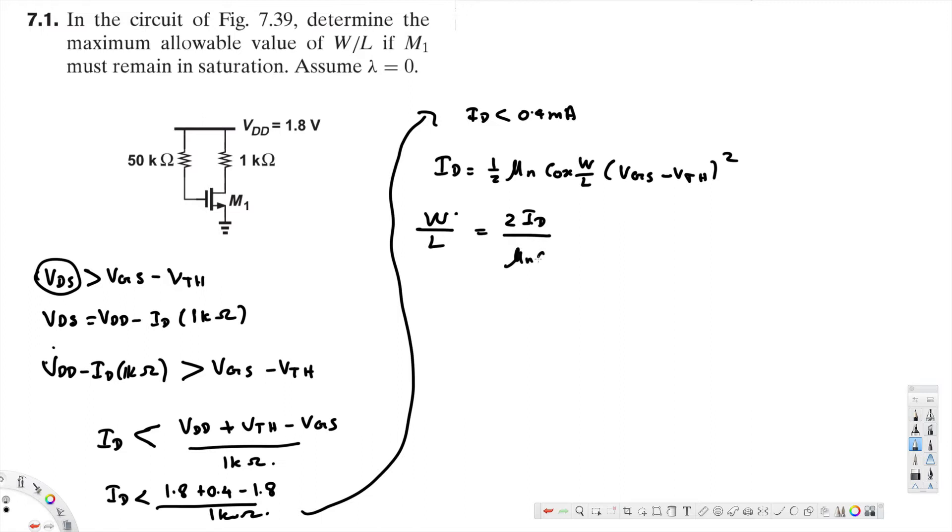divided by mu N Cox times VGS minus V threshold whole square. Now here W over L is maximum allowance, so maximum allowance means this one should be less than 2 times 0.4 milliampere over mu N Cox, the value of mu N Cox is 200 micro ampere per volt square, times VGS is 1.8 voltage minus V threshold is 0.4 square. And if you solve for W over L, you will get